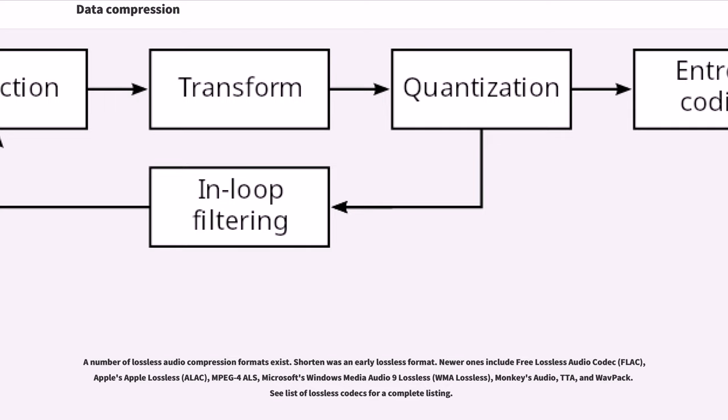Shorten was an early lossless format. Newer ones include Free Lossless Audio Codec (FLAC), Apple's Apple Lossless (ALAC), MPEG-4 ALS, Microsoft's Windows Media Audio 9 Lossless (WMA Lossless), Monkey's Audio, TTA, and WavPack. See list of lossless codecs for a complete listing.